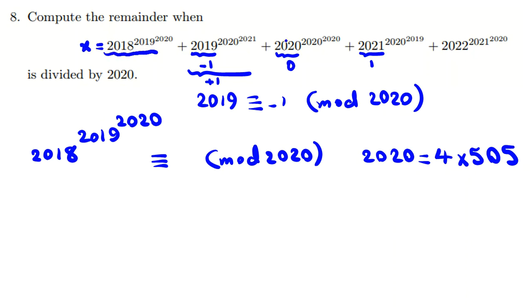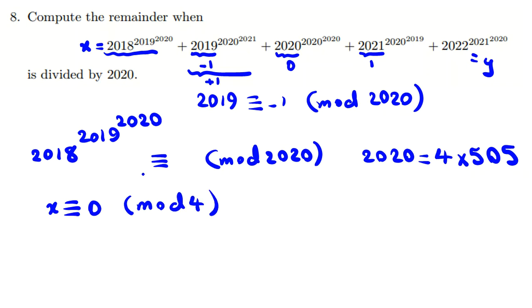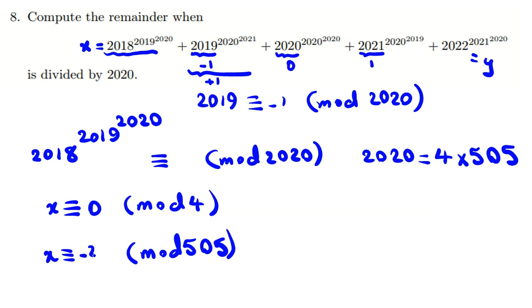To find x I need x mod 4 and x mod 505. x mod 4 is obviously zero because 2018 is 2 to a large power. For mod 505: 2018 mod 505 equals negative 2, since 4 times 505 is 2020. So we need negative 2 to the power of 2019^2020, and since the exponent is odd it remains negative 2 to the power of 2019^2020.